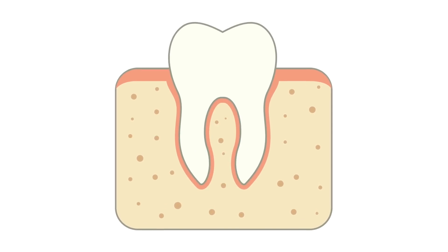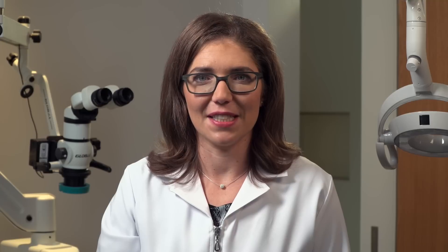Bleeding gums is not just an indicator of disease — it also contributes to the spread of toxins through the bloodstream. In the presence of factors such as smoking and stress, periodontal disease significantly increases the risk of coronary disease and heart attacks.